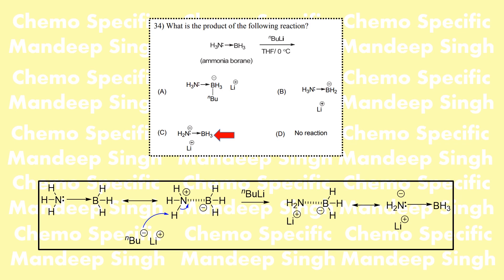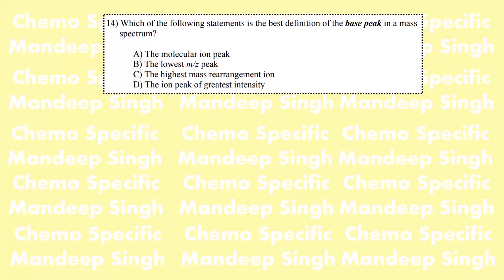The next question is about the base peak in mass spectrometry. The base peak is not the molecular ion peak — it is the peak with the greatest intensity in the spectrum, and it may or may not be the molecular ion peak.